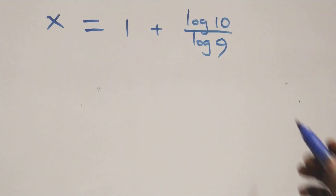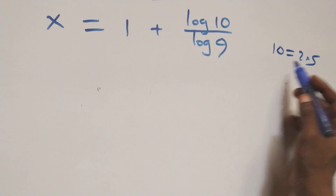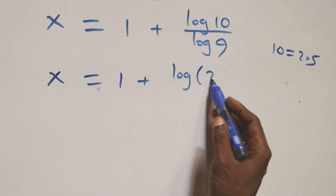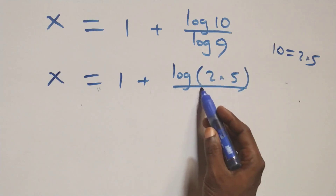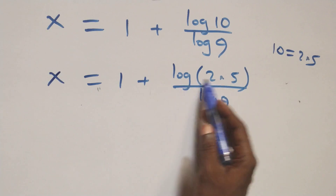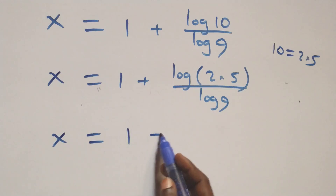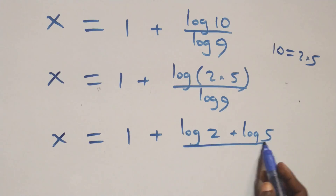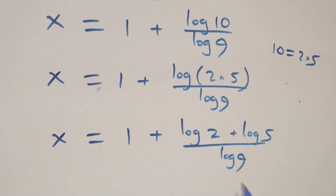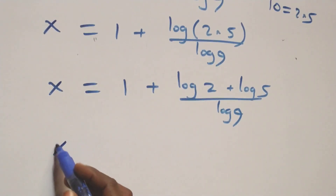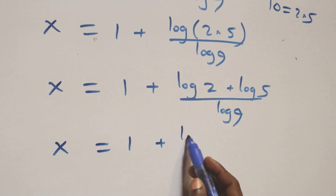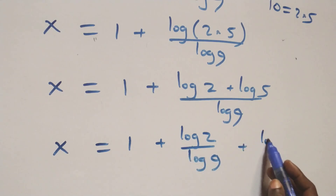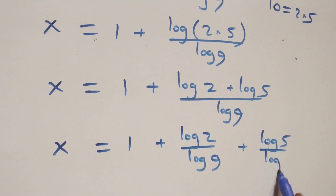The next step: we express 10 as 2 times 5. So we have x equals 1 plus log(2×5) over log(9). Applying the law of logarithms again, this implies x equals 1 plus log(2) plus log(5), all over log(9). We then separate into two fractions: x equals 1 plus log(2)/log(9) plus log(5)/log(9).